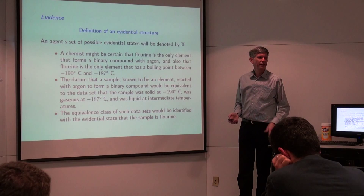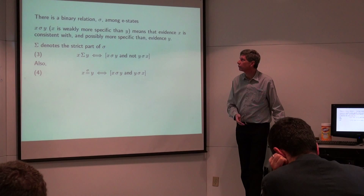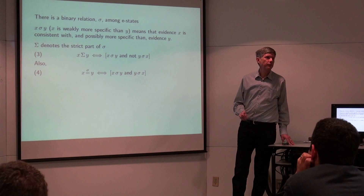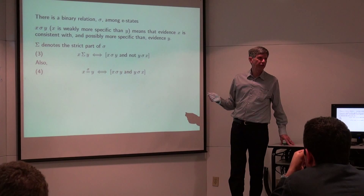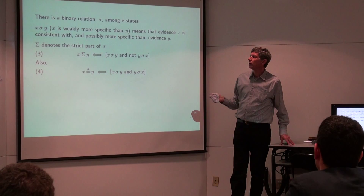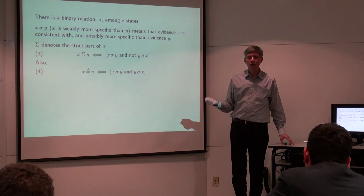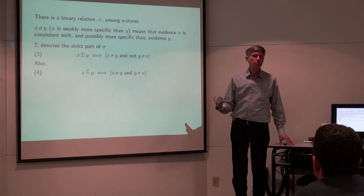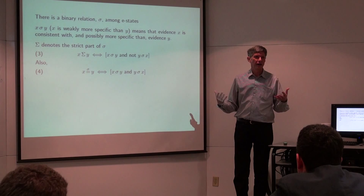The chemist works in the context of the deductive theory he learned in graduate school, which says each of these experiments has a unique answer — fluorine. There's going to be a binary relation among evidential states, which I'll denote by sigma: x sigma y means x is at least as specific as y and maybe more specific. If I've got the history of coin tosses and then get one more toss, I've gotten more specific. The strict part of this relation is denoted capital-sigma, and equality sub-sigma denotes that each state is equally specific to the other.